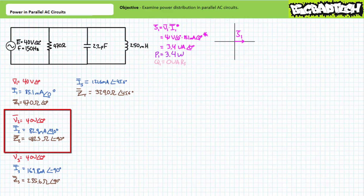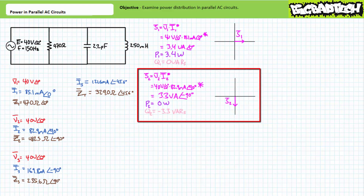Let's now examine the capacitive impedance Z2. Current through the capacitor leads the voltage across it by a relative 90 degrees. For this purely capacitive element, we should anticipate all of apparent power to be directed towards a reactive interchange. Apparent power is the complex conjugate of voltage times current. Substituting in our values, we arrive at an apparent power figure of 3.3 volt amperes at an angle of negative 90 degrees. Resolving this into its real and reactive components demonstrates this capacitor is directing zero watts towards real power and negative 3.3 VARs towards a reactive interchange, as anticipated given the entirely reactive nature of a capacitor.